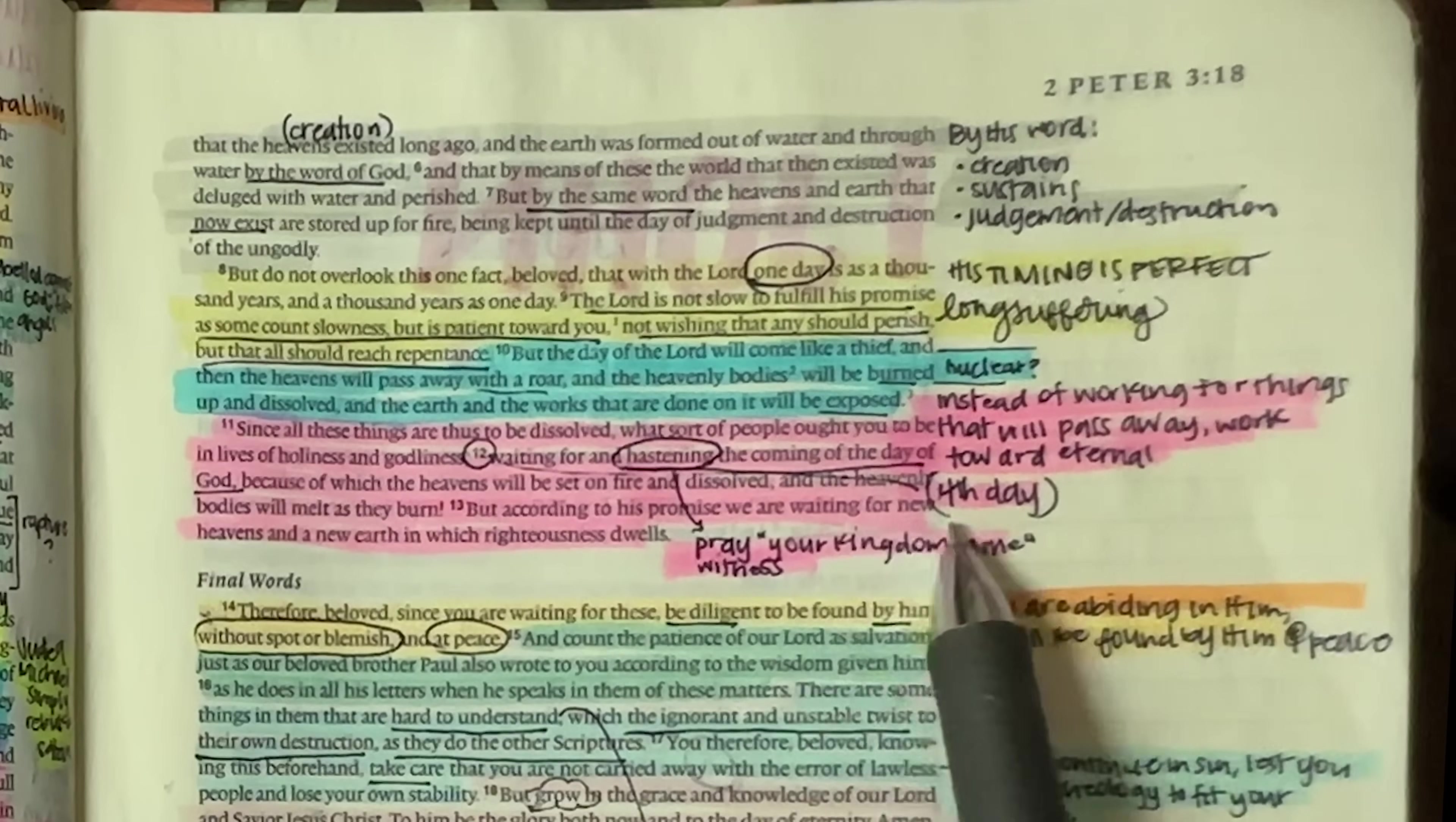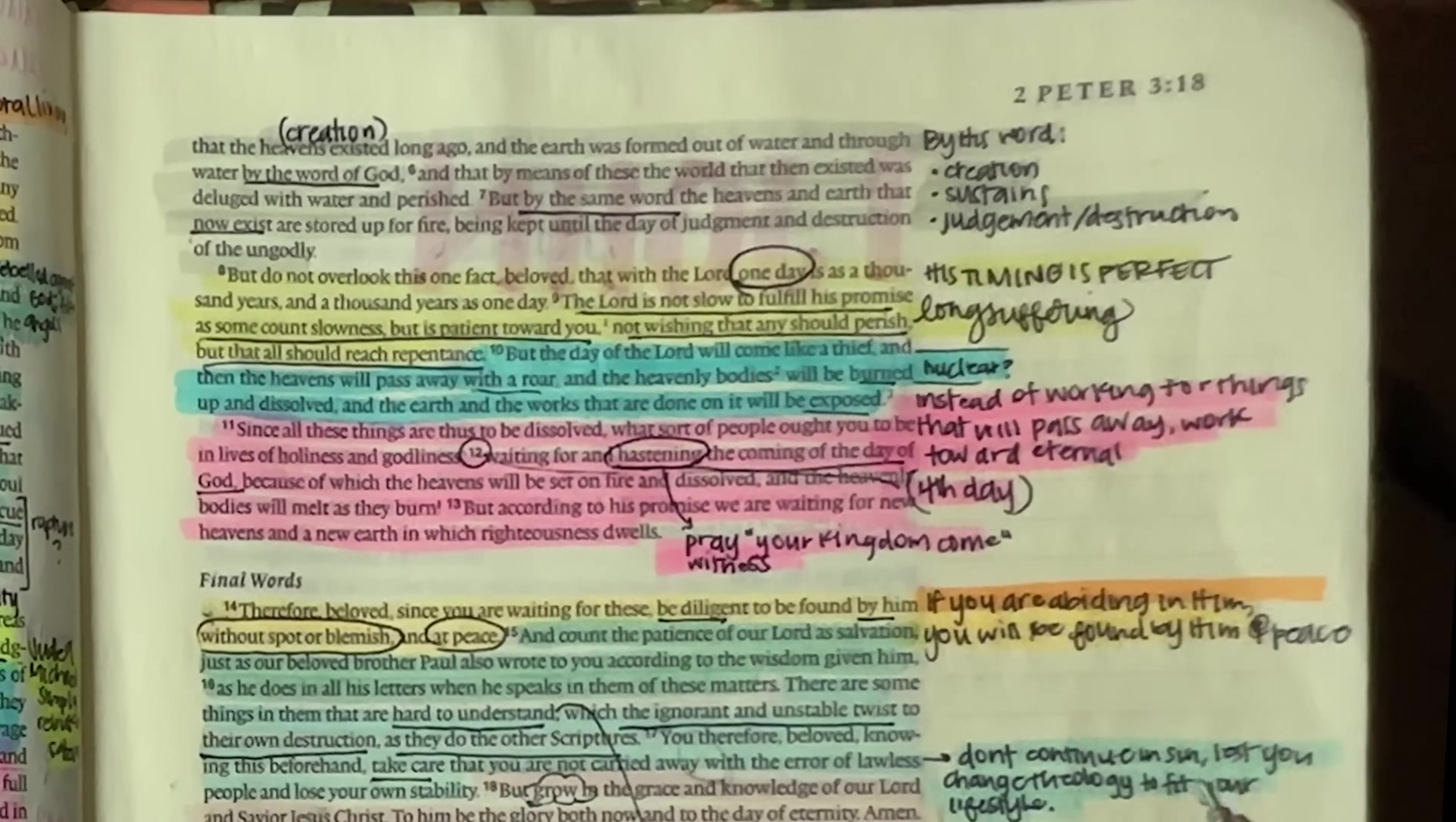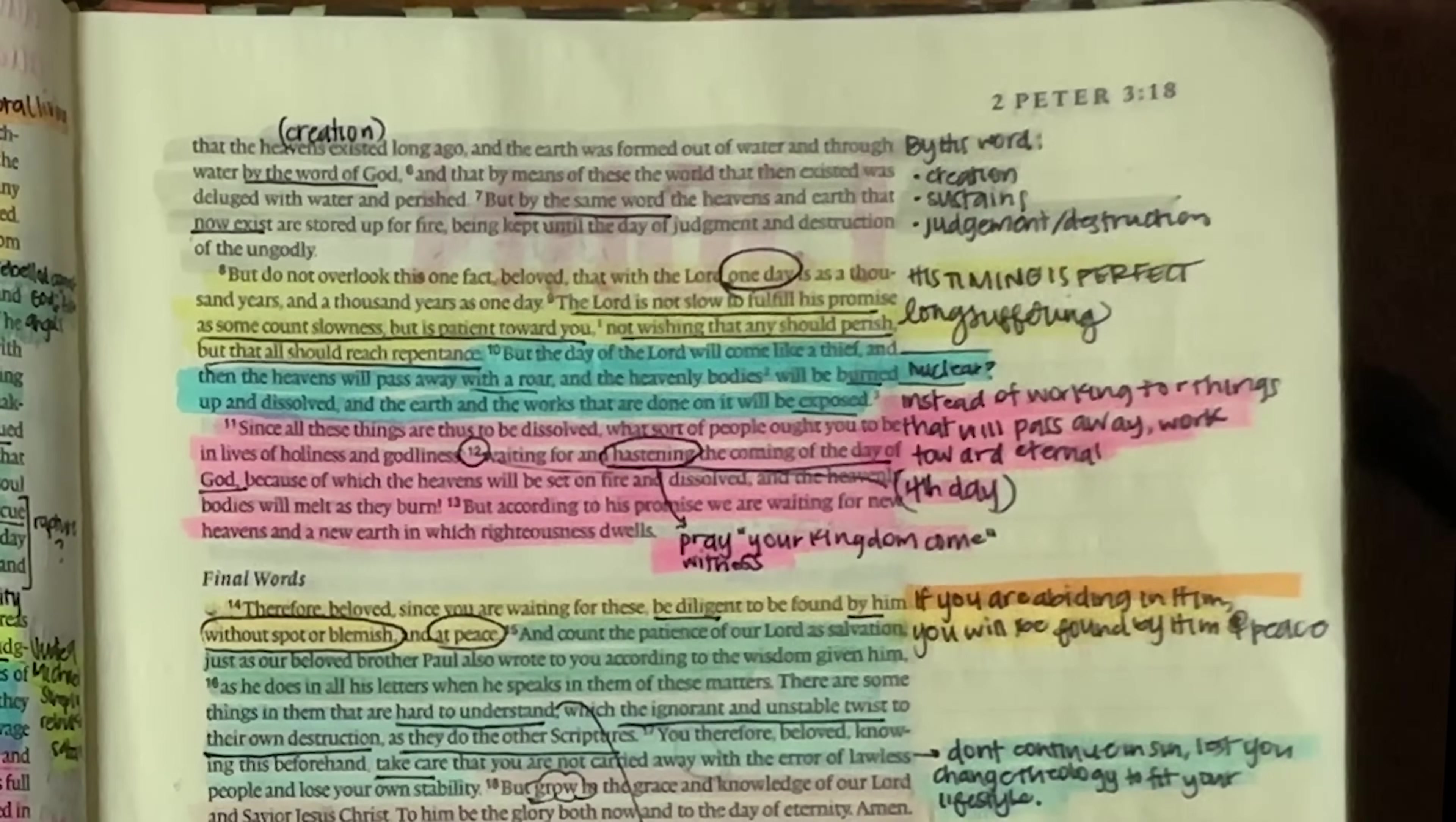But according to his promise, we are waiting for the new heavens and a new earth in which righteousness dwells. So instead of just working for things on this earth that are going to pass away, we should be working toward the eternal, toward that fourth day. Now, if you want to look at some of the days of the Lord, there was the day of man, which was basically in the garden of Eden until the fall of man. Then we have the day of Christ, which is referring to the rapture. There will be the day of the Lord, which will be the time from the tribulation through the millennium. And then the day of God will be after the millennium when the great judgment happens and the new heaven and new earth is revealed.